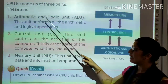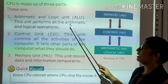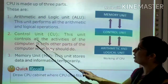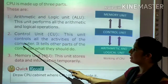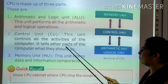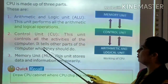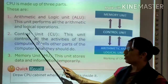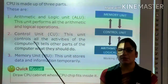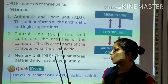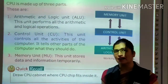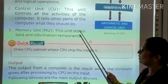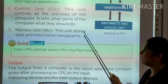The second part is the Control Unit, which controls all the activities of the computer and tells other parts of the computer what they should do. The third part is the Memory Unit, which stores data and information temporarily.